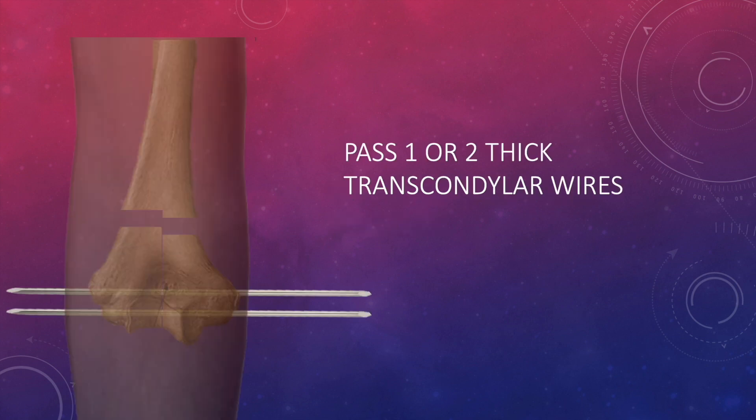Once you have reduced the articular block, then you have to pass one or two thick transcondylar wires. The wires need to be parallel to the joint or you can say orthogonal or 90 degrees to the axis of humerus diaphysis. The thick wire means it should be around 2 mm or 2.5 mm in diameter.